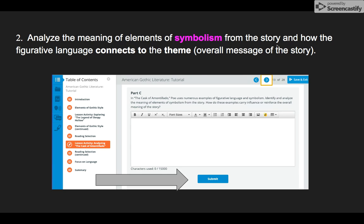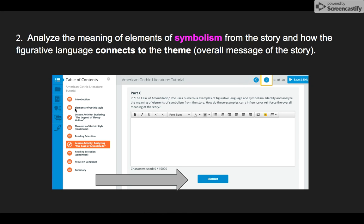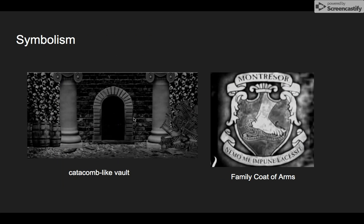The second prompt asks you to analyze the meaning of some symbols in the story. A great tool is the tutorial, slide 13 — this lesson activity part C asks you about symbolism. Click submit and you'll see a sample answer that discusses a lot of symbolism. Some symbols your classmates have written about include the family coat of arms that Fortunato asks Montresor about. The Montresor family has been around a long time and is probably very wealthy, so they have a family symbol.